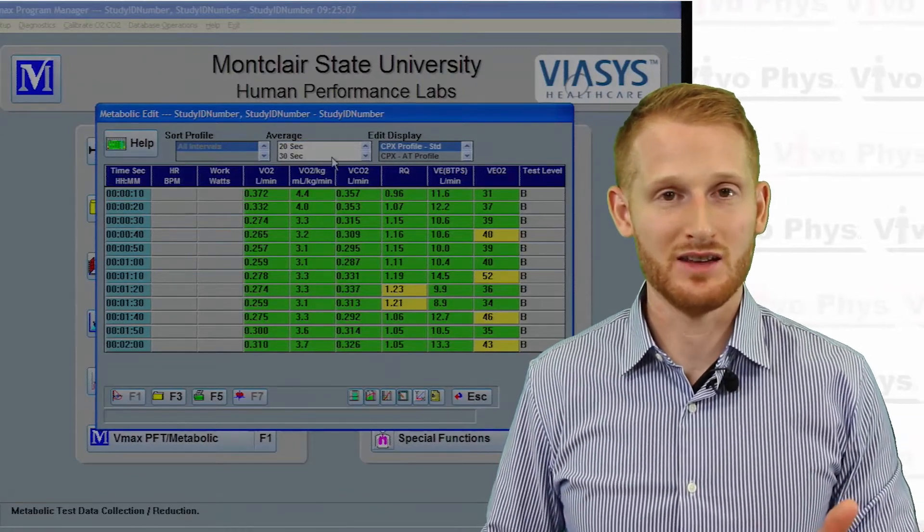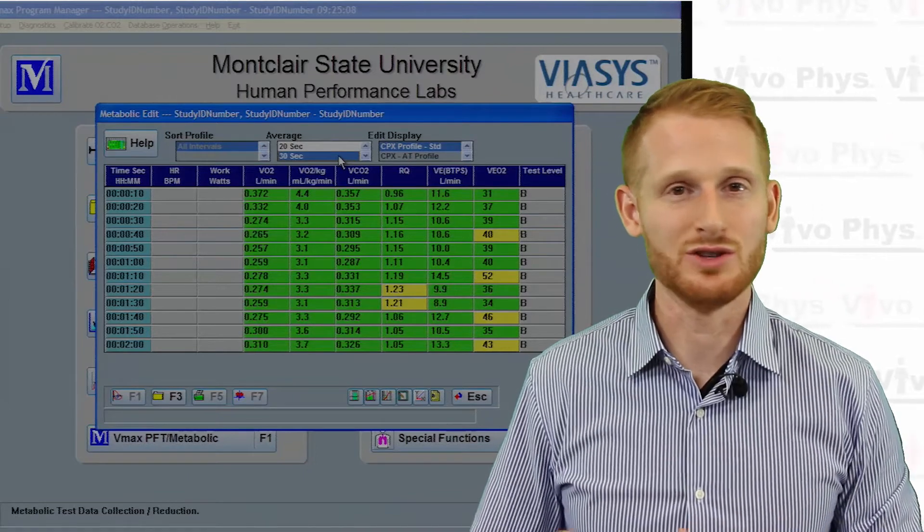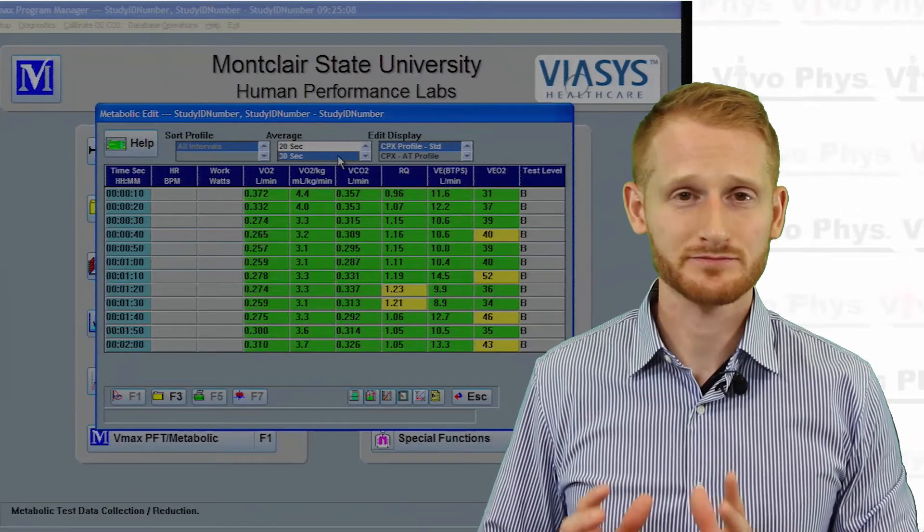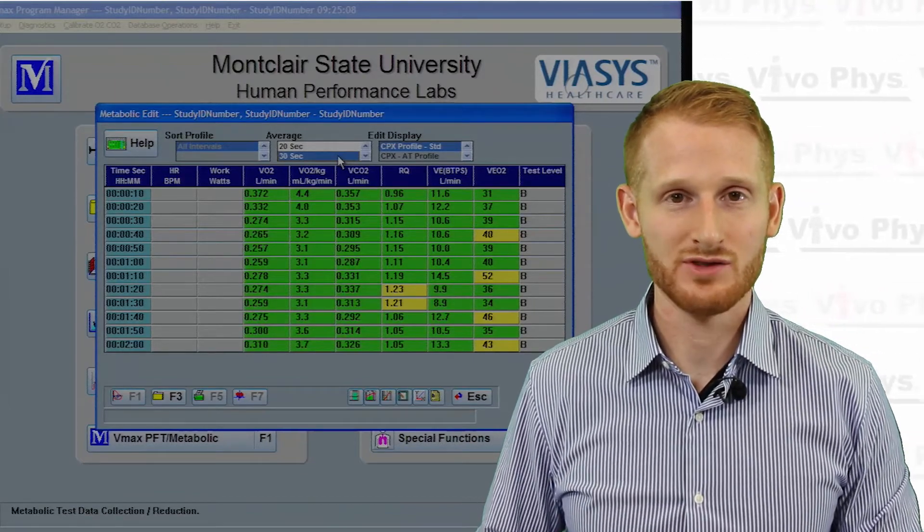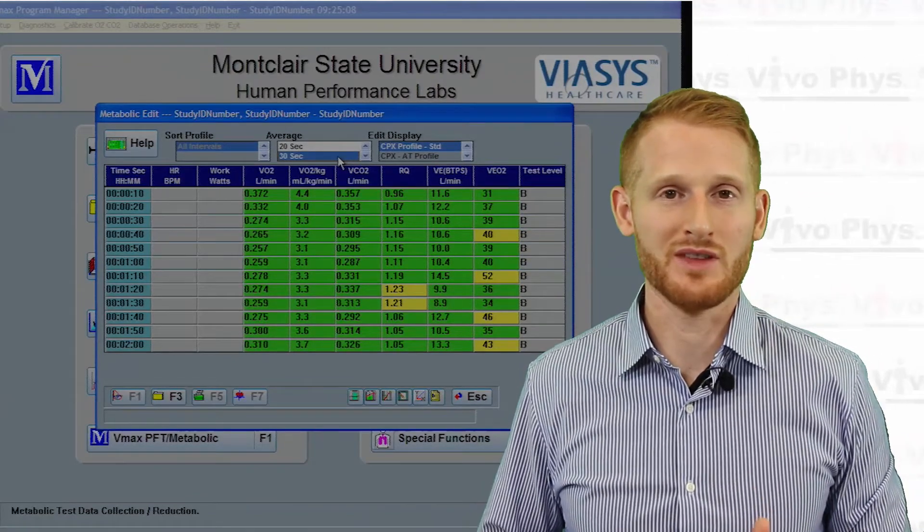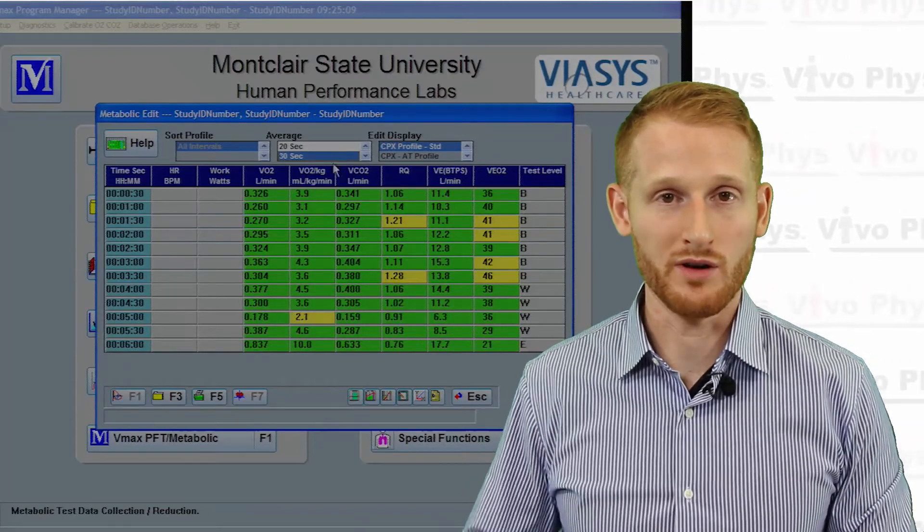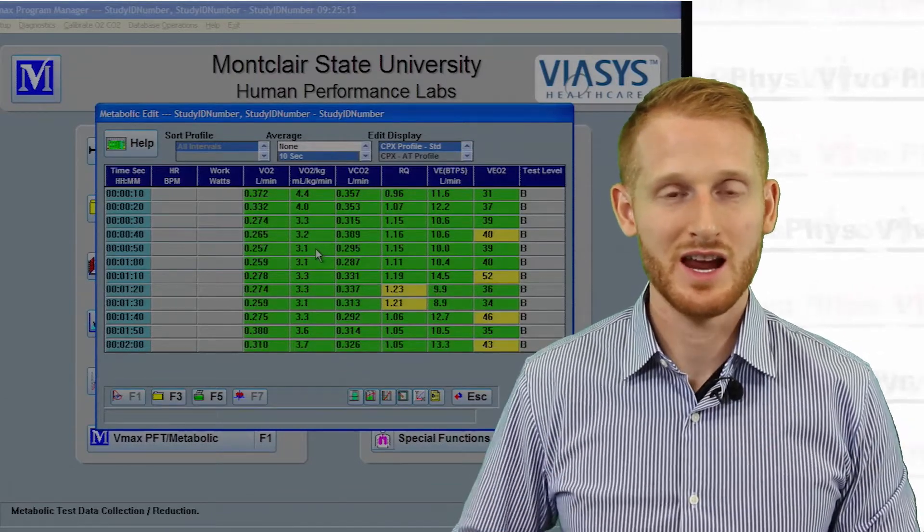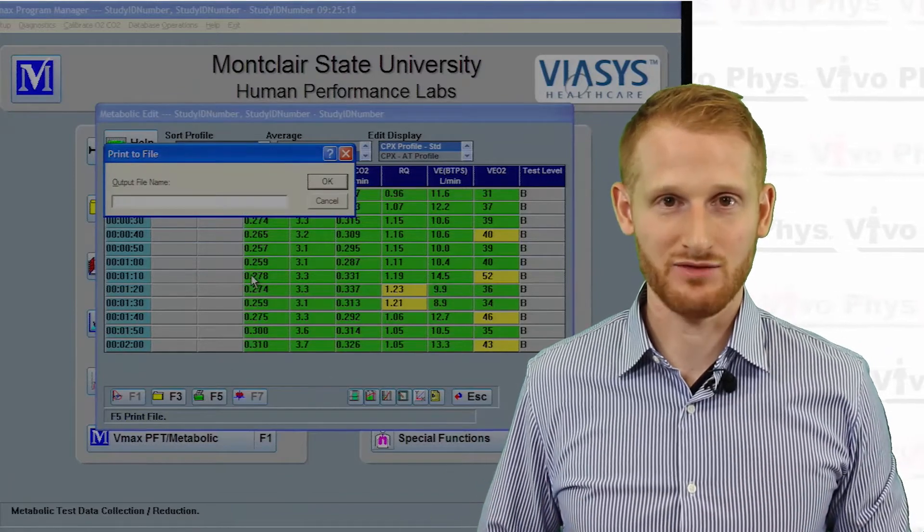It's set to breath-by-breath data initially, which is going to be very noisy—there's going to be a lot of very high and very low numbers and it's not very accurate. What you're going to want to do is change it to be either 10-second averages or 30-second averages. 10 seconds is generally enough, but sometimes you want something that is very stable, so 30 seconds. Click on one of those averaging options and then just hit print.